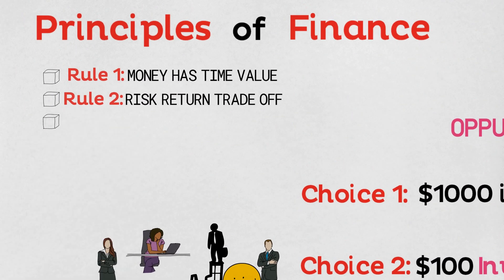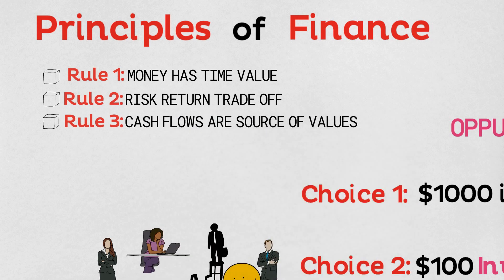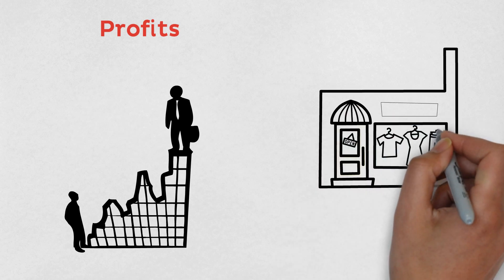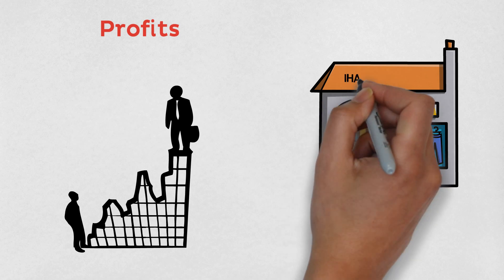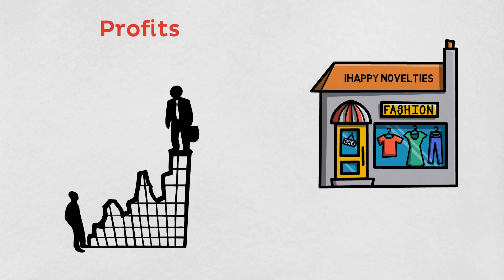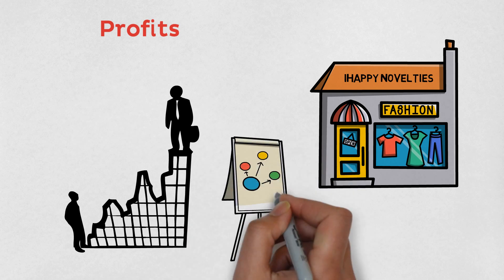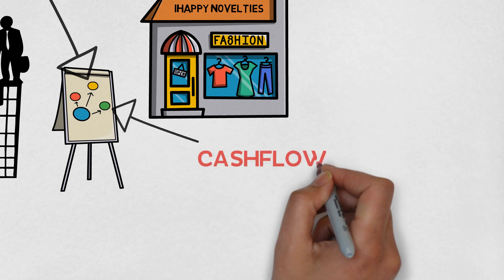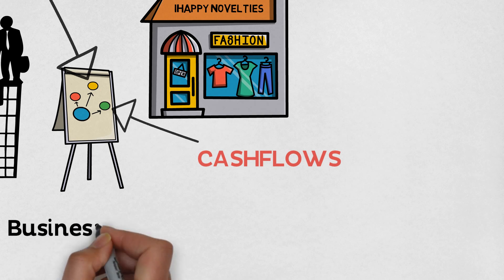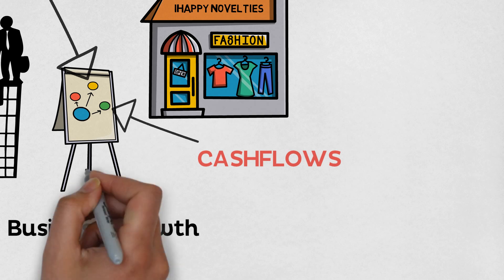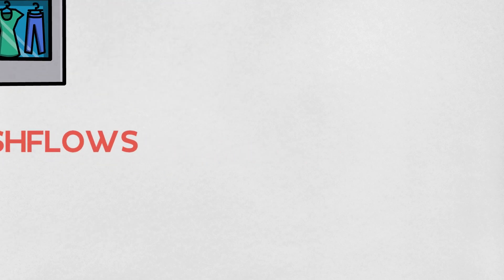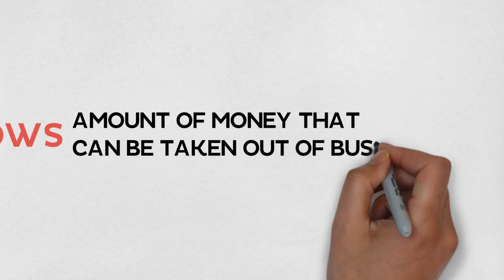Rule number three: cash flows are the source of value. Profits are an accounting concept that shows the performance of a business over time. Profits could be projected or real-time, but do not guarantee you can take money out of the business. For example, for iHappy Novelties, if I sell a t-shirt with a cost price of $10 and a selling price of $30, my profit is $20. But from those profits I still need to pay rent, bank charges, and employee wages. Say I need to sell at least five t-shirts every day to cover those charges — that's the break-even point, and this value represents the cash flow of the business. Cash flows are very important and a source of value. It's important you understand the difference between profits and cash flow, as we'll discuss this in future topics.